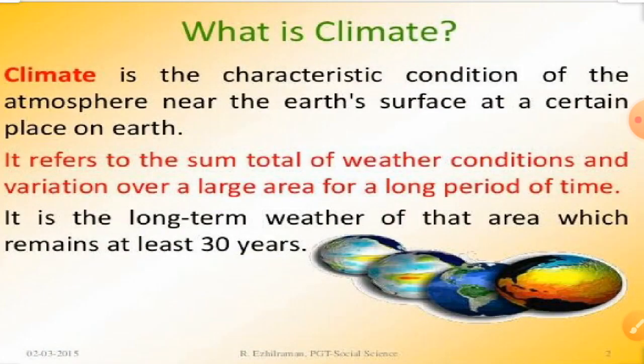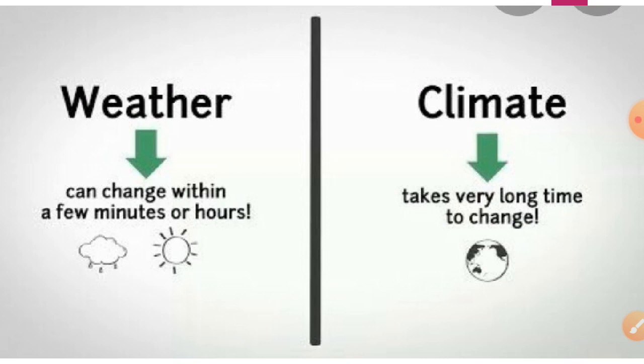Next is about climate. Climate is the characteristic condition of the atmosphere near the Earth's surface at a certain place on Earth. It refers to the sum total of weather conditions and variation over a large area for a long period of time. It is the long-term weather of that area which remains for at least 30 years. Weather will change within a few minutes or hours, but climate will take a long time to change.